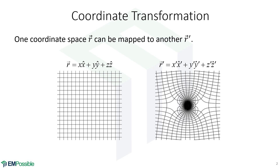It all starts off with a Coordinate Transform. We might have our original Coordinate System — that's just X, Y, Z — and we have some crazy Coordinate System that we're interested in, that is an X prime, Y prime, Z prime.